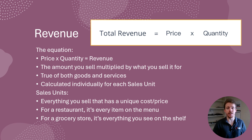Revenue should be calculated individually for every single sales unit. A sales unit is anything you sell that has a unique cost for you and/or a unique price for the customer. For example, a restaurant's sales units will include every item on the menu — each soup, salad, entree, dessert, and beverage. Each of these sales units will have its own revenue associated with it, and can all be added up to find the total revenue for the business as a whole.